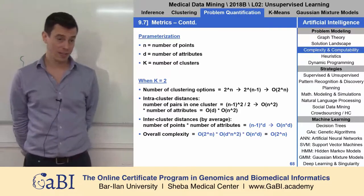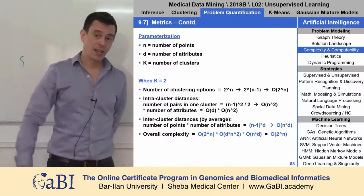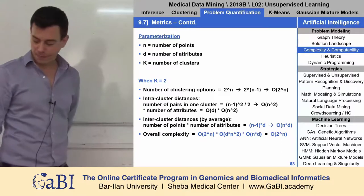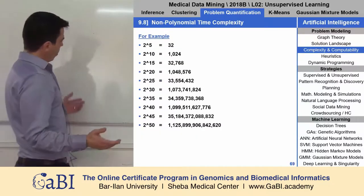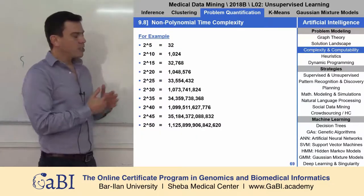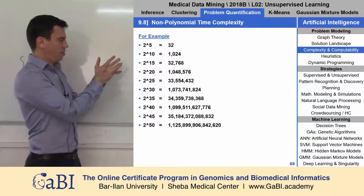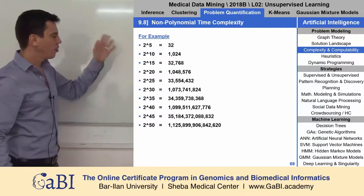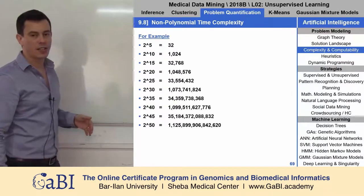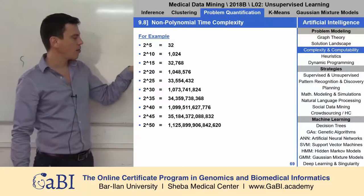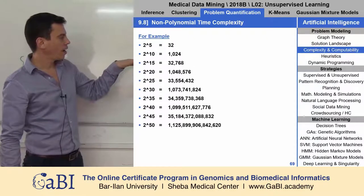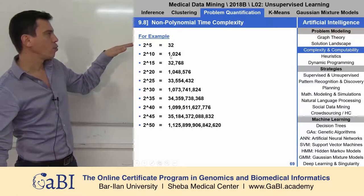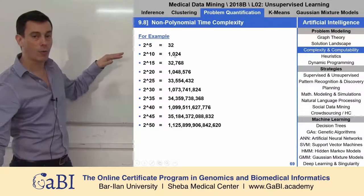So that was complexity. Now let's discuss computability. If this is the complexity, here is the number of operations needed for different sizes of data sets.